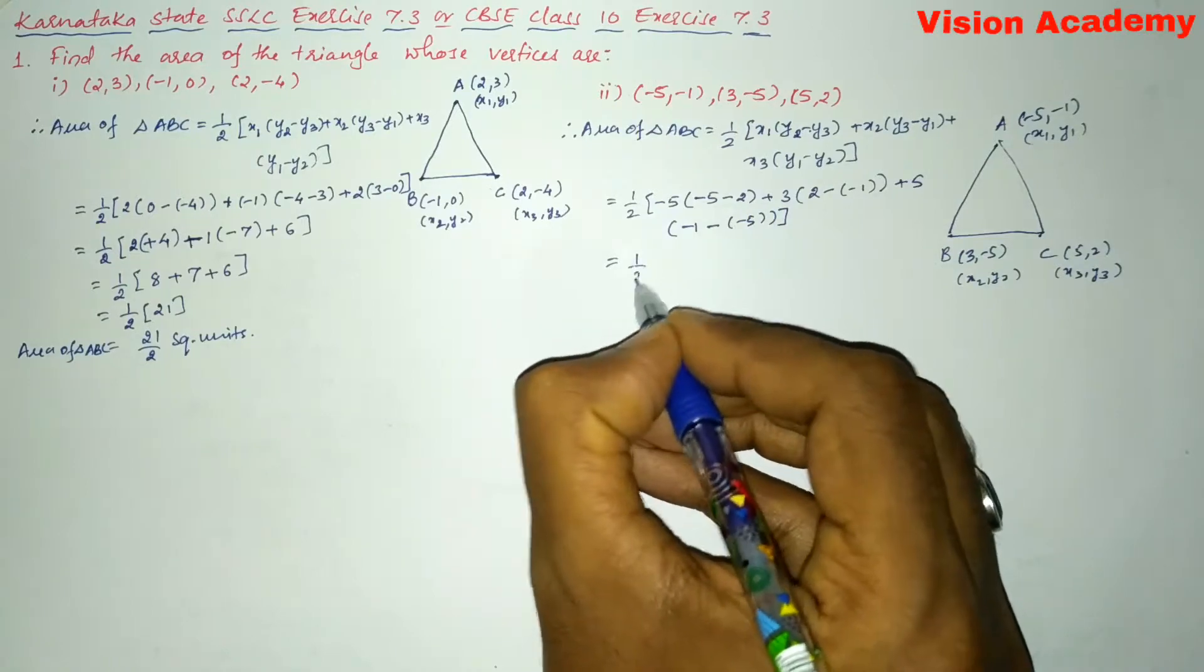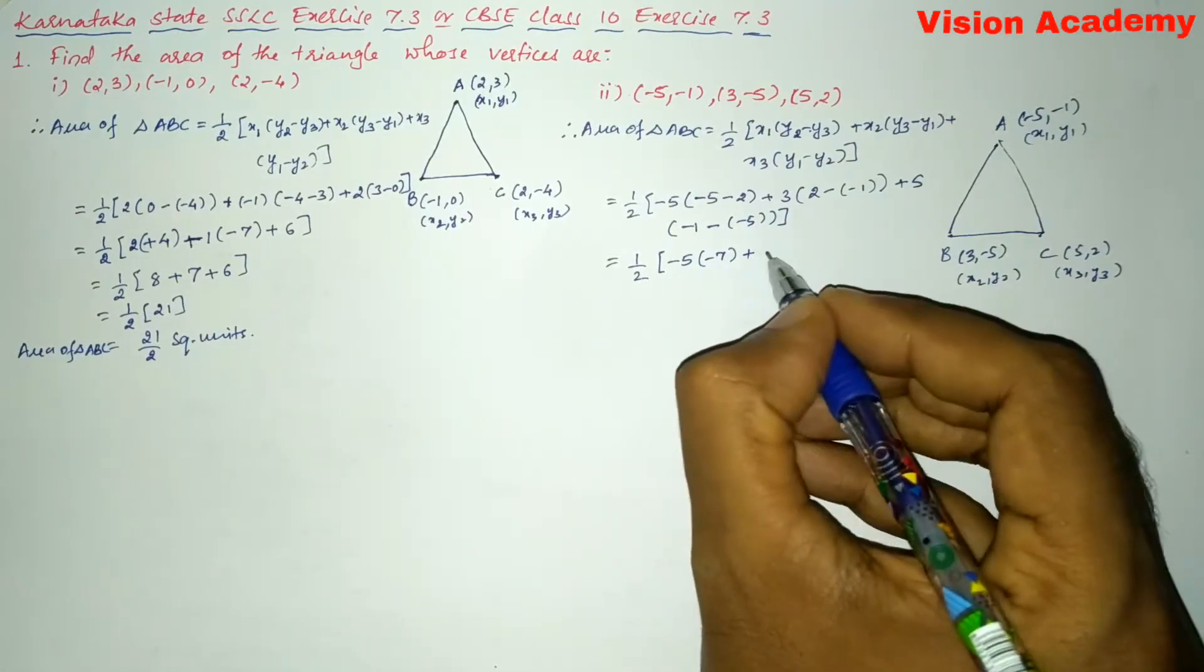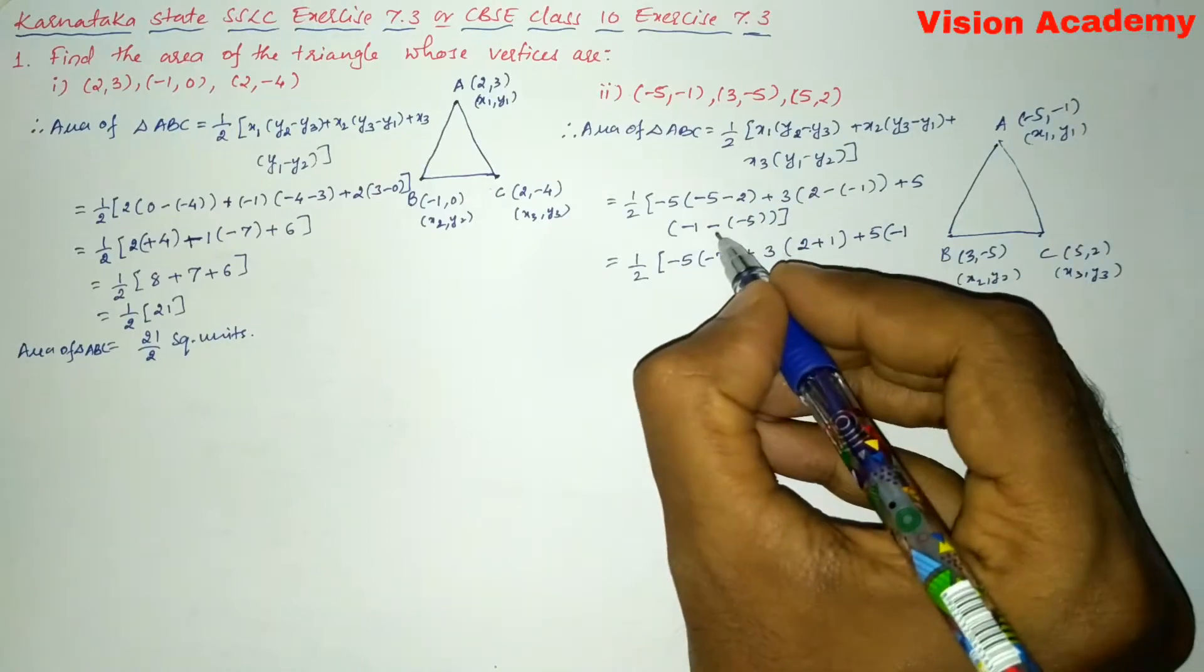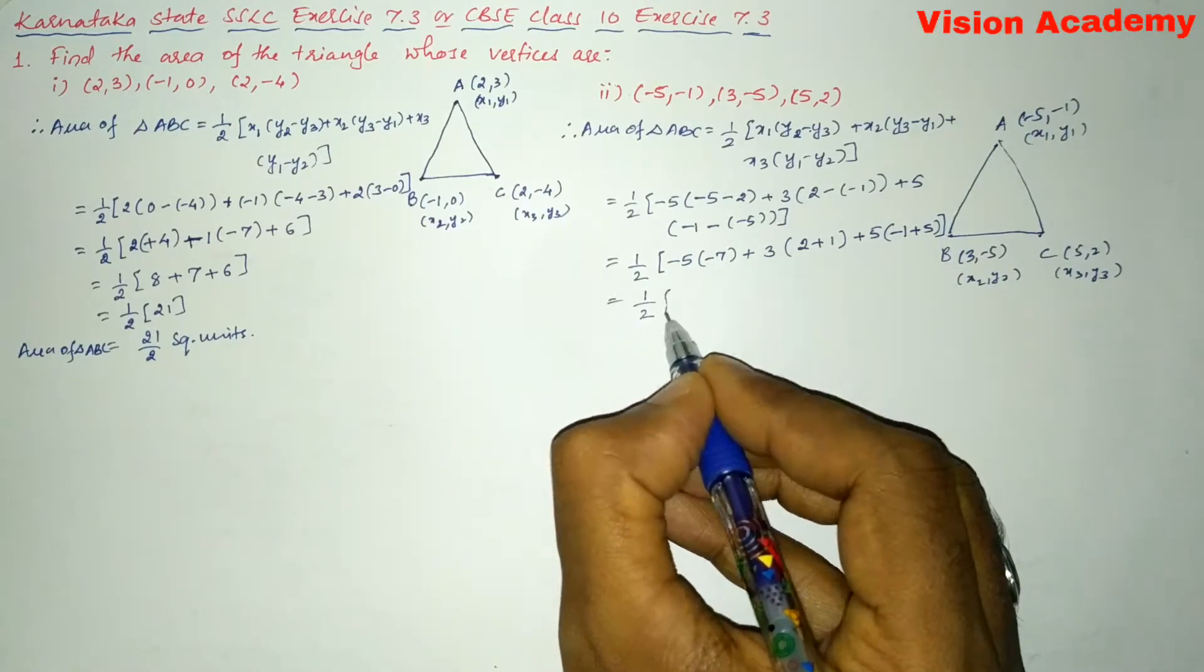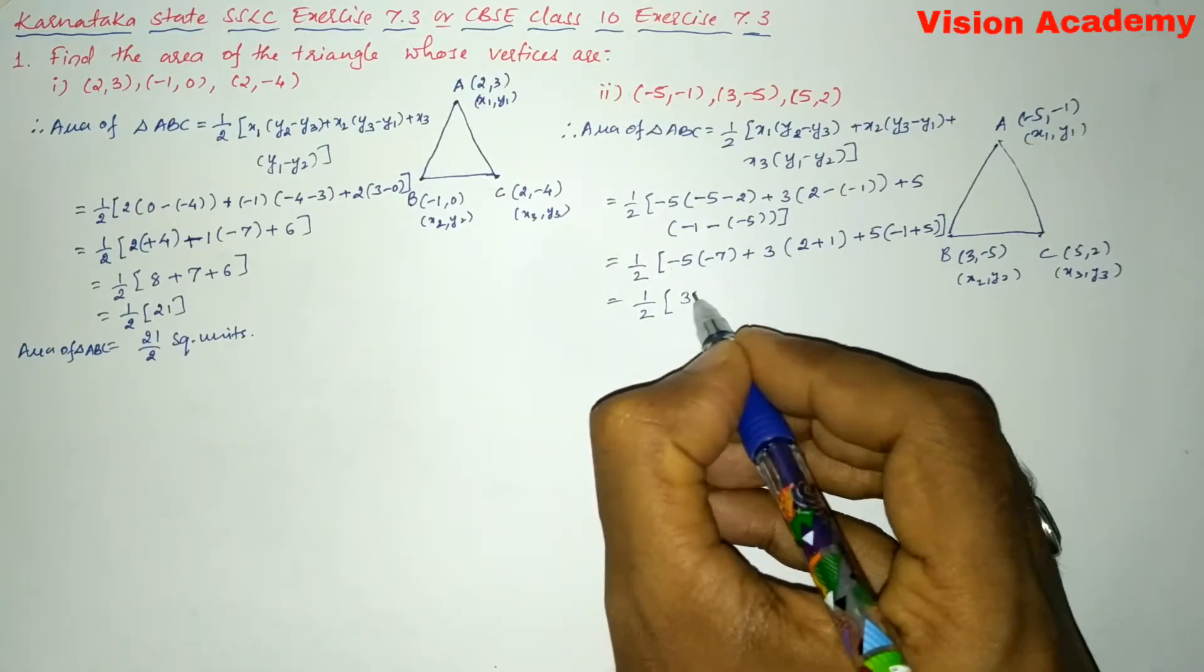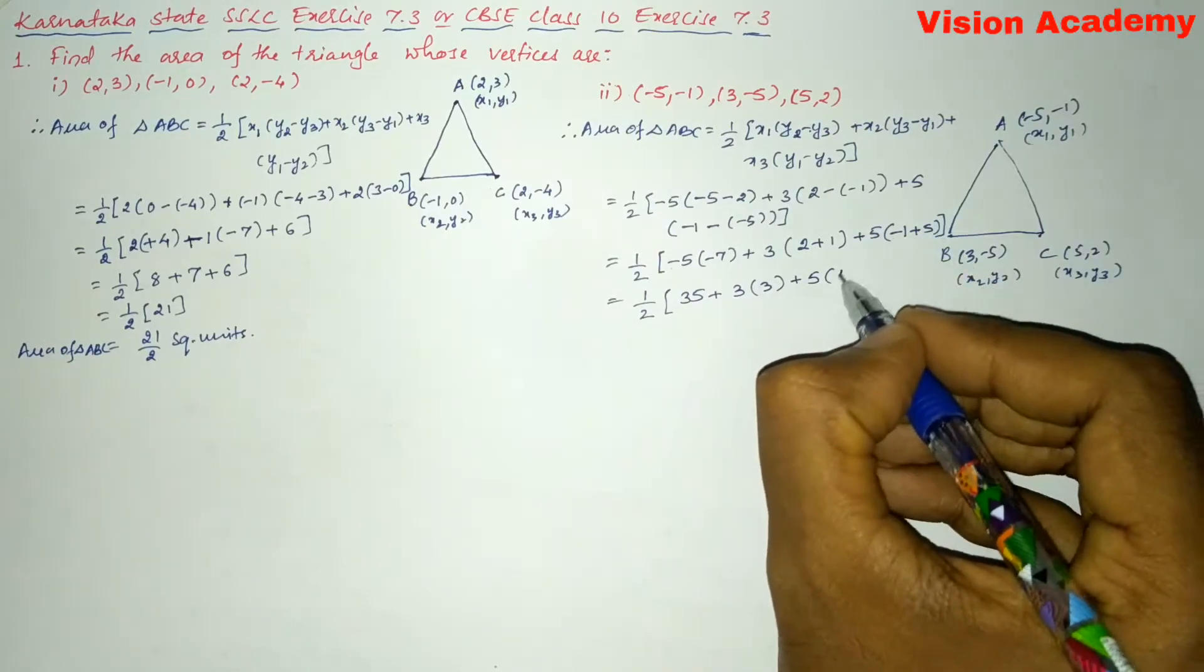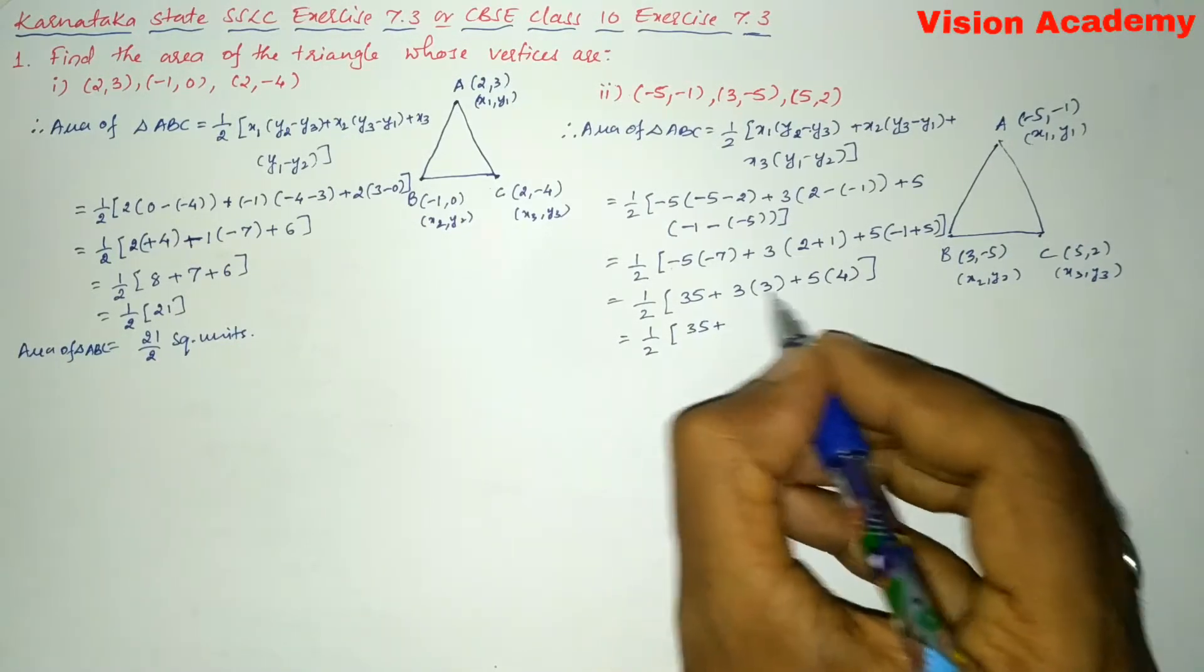Now let us further simplify. This gives us 1/2 into [(-5)(-5-2) + 3(2-(-1)) + 5(-1-(-5))]. Further we will simplify: 1/2 into [(-5)(-7) + 3(3) + 5(4)]. So this is 1/2 into (35 + 9 + 20).